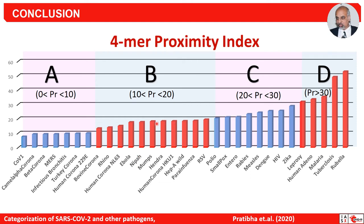Group B drugs may have some chances of success; for example, Remdesivir for Ebola is being tried and may have some chance. From Group C, HIV drugs have also been tried in India and have shown moderate success. However, hydroxychloroquine and the BCG vaccine did not show much success in containing coronavirus. It seems the proximity index does give a direction for finding a proper drug for coronavirus.